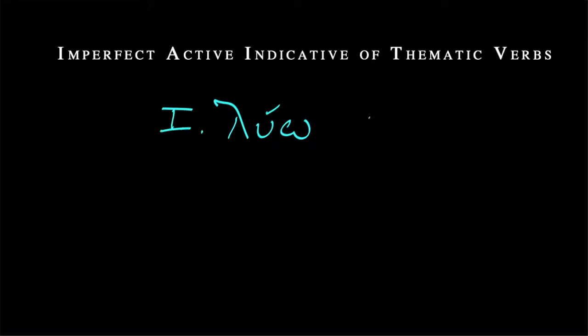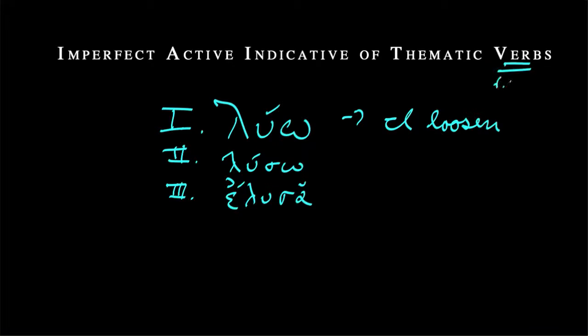Write that on a Roman numeral I, meaning I loosen. Then we have learned that the second principal part, which we got to apply a bit last week, was λύσω. The future, I will loosen. Third was ἔλυσα, short alpha, which allows the accent to move back to the antepenult.